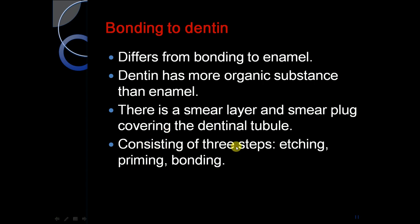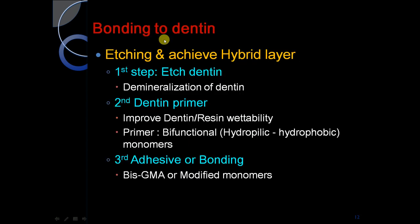Bonding to dentine consists of three steps: etching, priming, and bonding. Etching the dentine achieves a hybrid layer. The first step is to etch the dentine causing demineralization. The second step is the dentine primer, which improves dentine-resin wettability. The primer is bifunctional — it is both hydrophilic and hydrophobic. The third step is the adhesive or bonding resin; BIS-GMA or modified monomers are used.